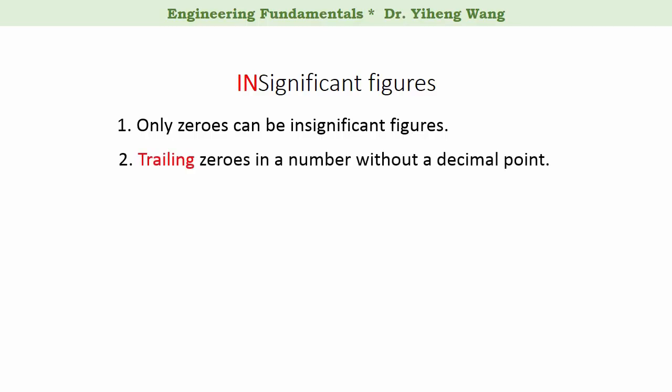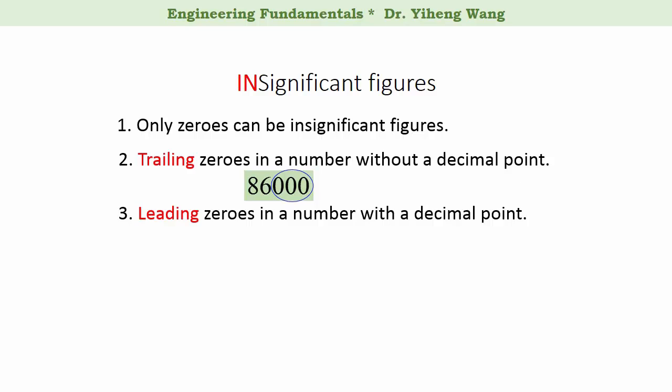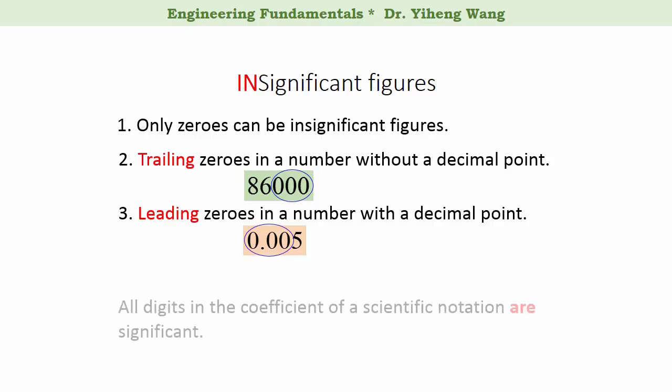Trailing zeros in a number without a decimal point are insignificant. For example, for the number 86,000, these three zeros are trailing in a number that does not have a decimal point. Therefore these three zeros are insignificant, and 86,000 has two significant figures: 8 and 6. Also, leading zeros in a number with a decimal point are insignificant. For example, for the number 0.005, these three zeros are leading, therefore they are insignificant, and this number only has one significant figure, which is 5. As a separate rule, if a number is given in scientific notation, then all digits in the coefficient are significant.